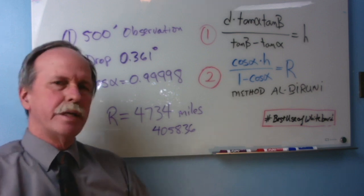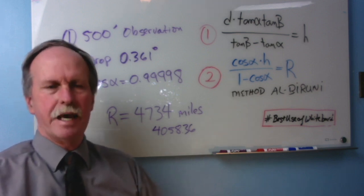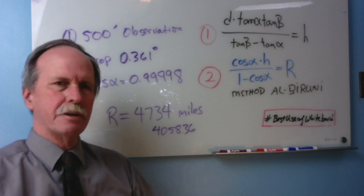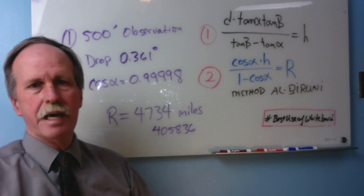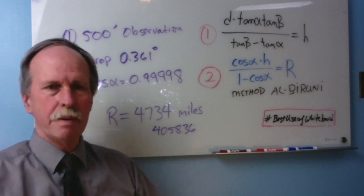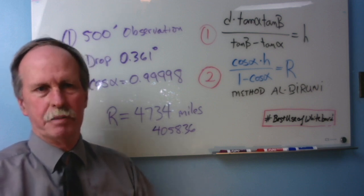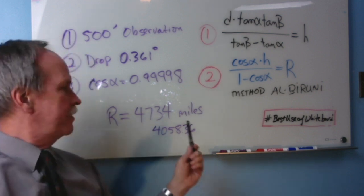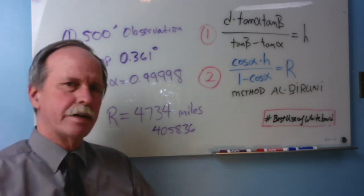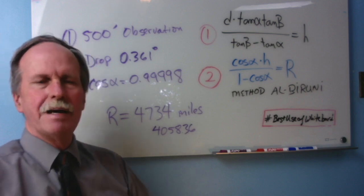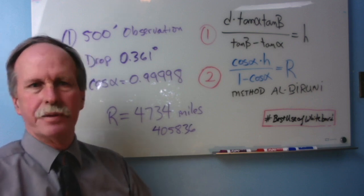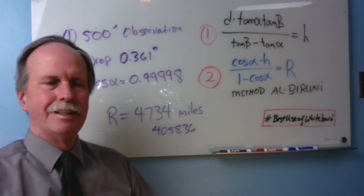When Al-Biruni did his measurement, he was using an astrolabe. And an astrolabe is accurate only to about one-tenth of a degree. So, the fact that he got as close as he did with the equipment that he had was pretty remarkable. The other thing is, he didn't have any idea of the effects of refraction.